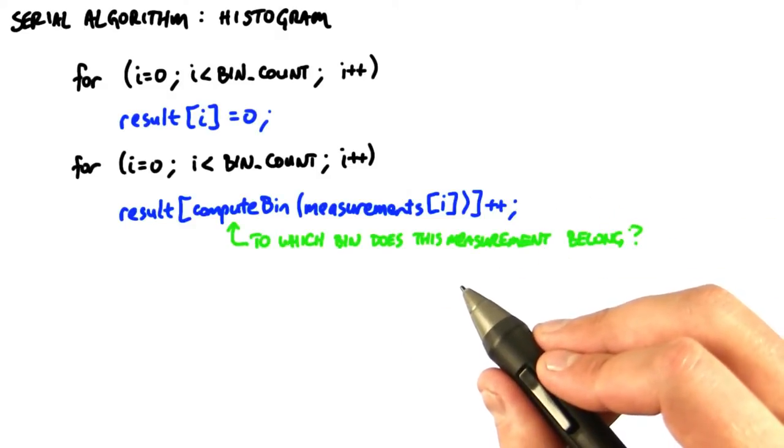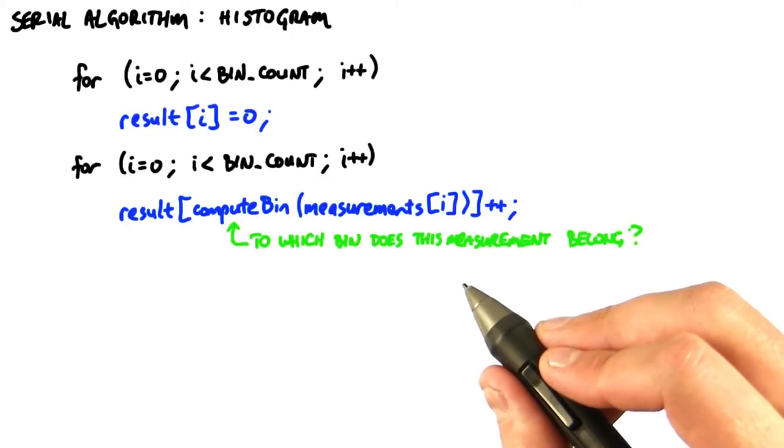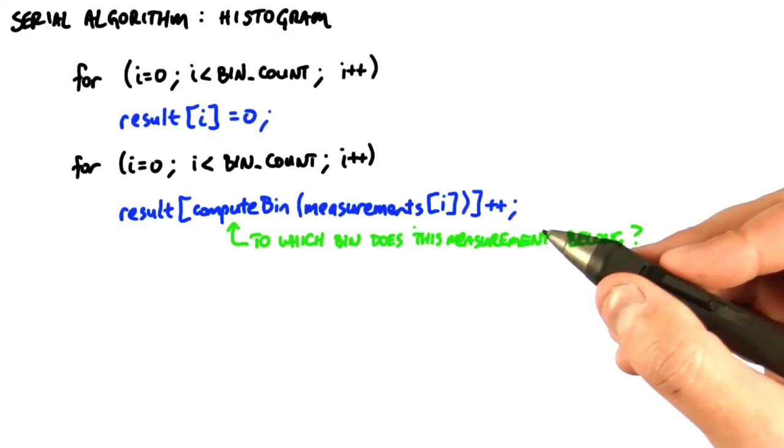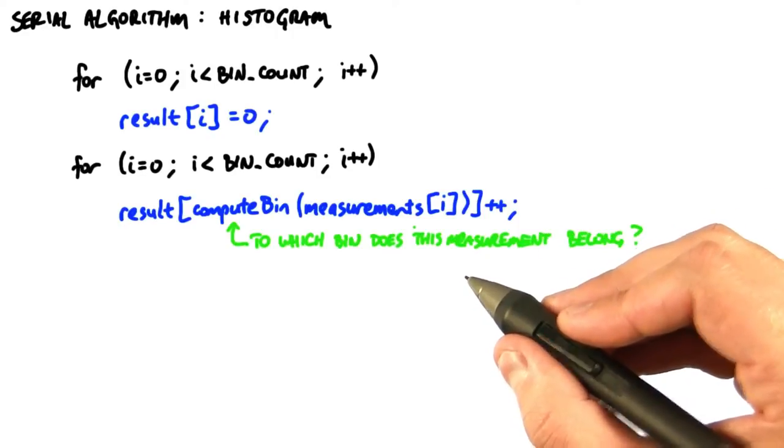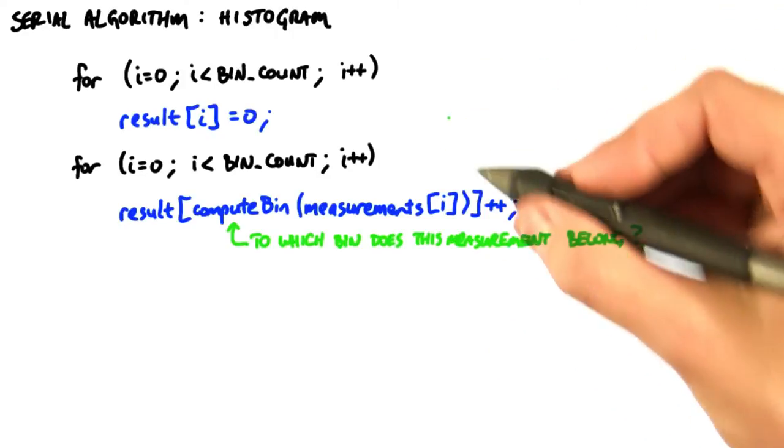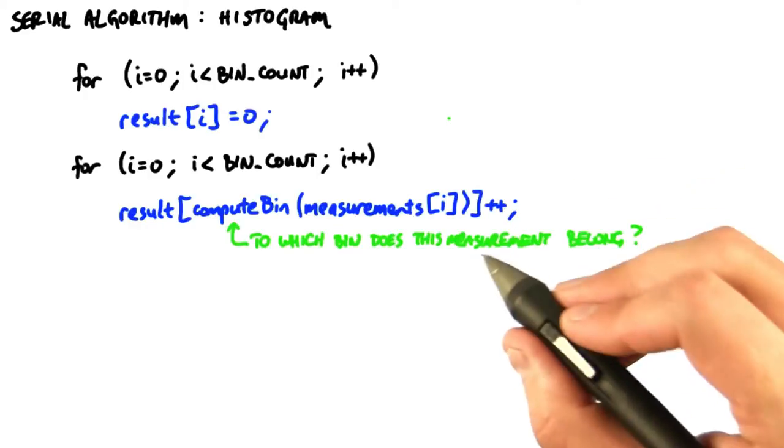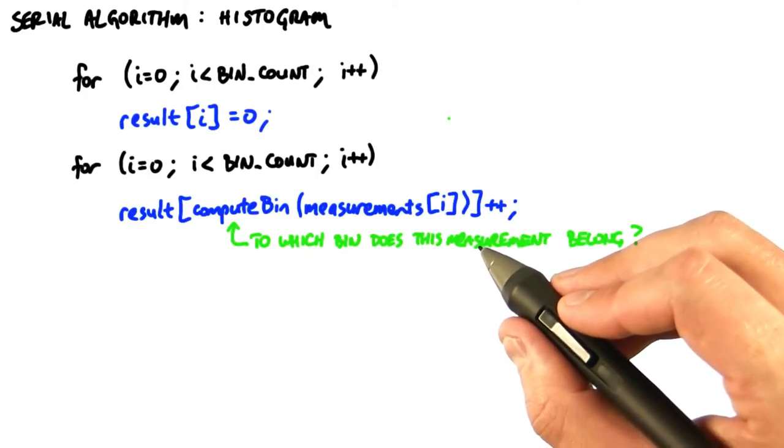So, let's first take a look at the serial histogram algorithm. Here's our code here. We're going to have two for loops where we loop over all the histogram bins. The first phase, we initialize all the bins to 0, the counts for each of the bins to 0. This is so simple, we're not going to mention it again.